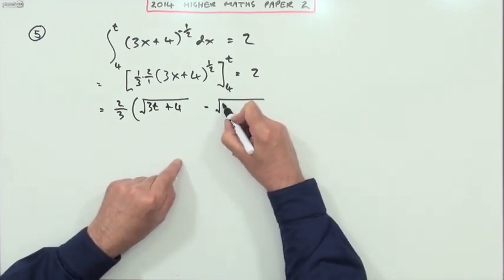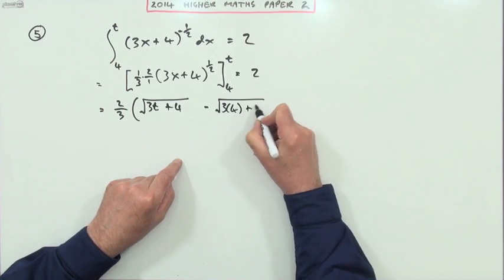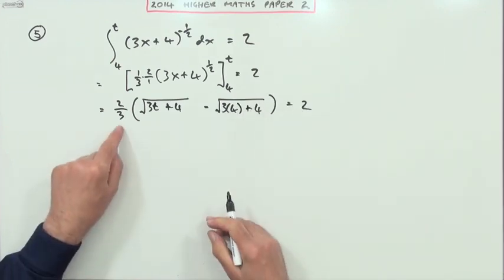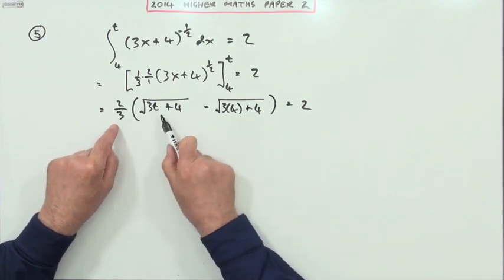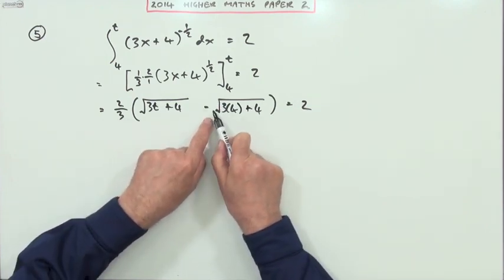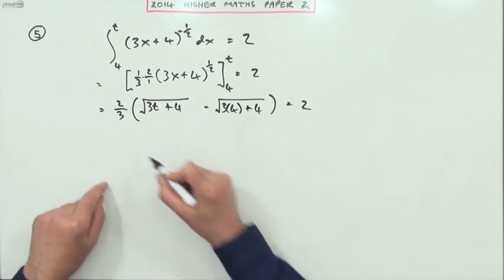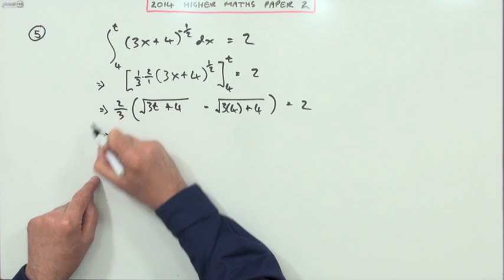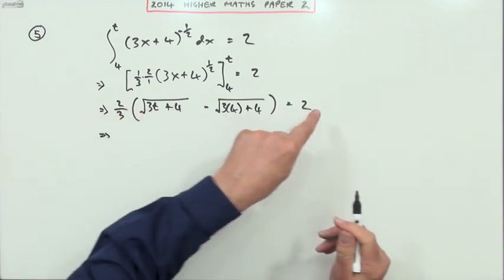I've just taken the two-thirds out altogether. Which means in this next line, I could just take the two-thirds across to the other side. So dividing by 3 means it'll be times 3, and multiplying by 2 means it'll be divide by 2.